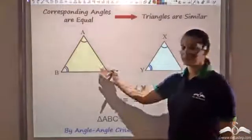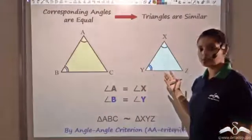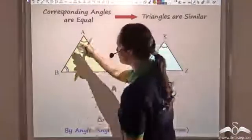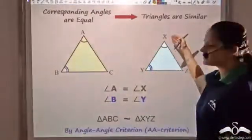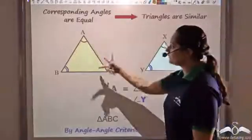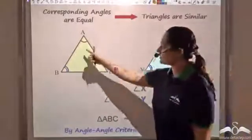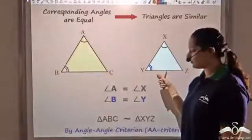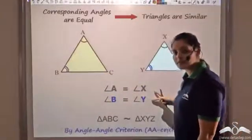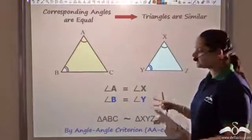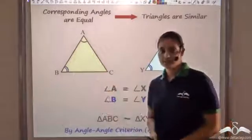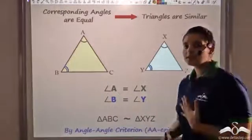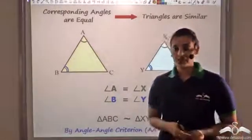We had already seen that two triangles can be said to be similar if the corresponding angles are equal. So if I have triangle ABC and another triangle XYZ, if any two angles are equal — let's say A equals X and B equals Y — if two pairs of corresponding angles are equal, I can say that the triangles are similar by the angle-angle criterion. Now let's look at some of its applications.